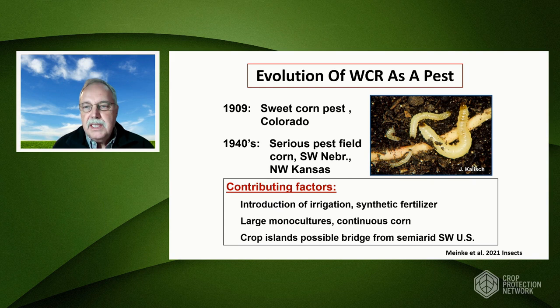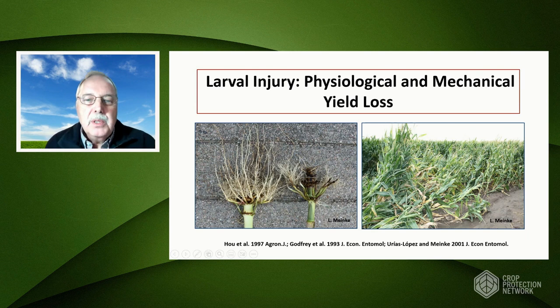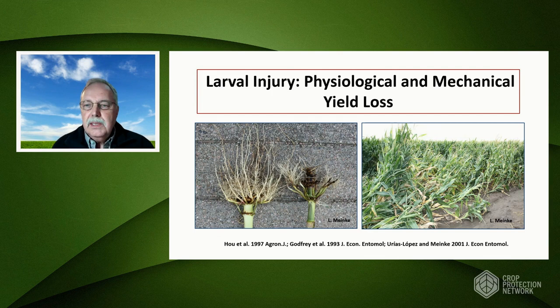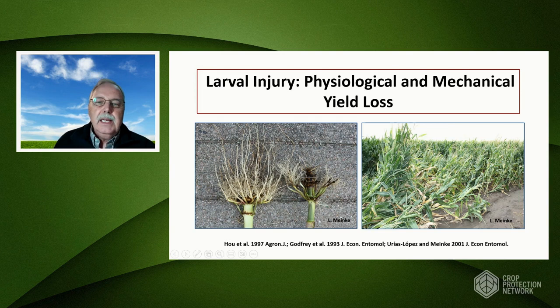From an injury standpoint, we're most concerned about larval injury — the immatures that feed on the roots. You can see on this slide there's an undamaged root system and then a severely damaged root system. Corn rootworms can prune the roots, which limits nutrient and water uptake and also causes plants to be unstable. With very wet conditions and high winds, plants can be blown over, resulting in both physiological yield loss and mechanical yield loss during harvest because some ears may stay on the ground and the combine can't pick them up.